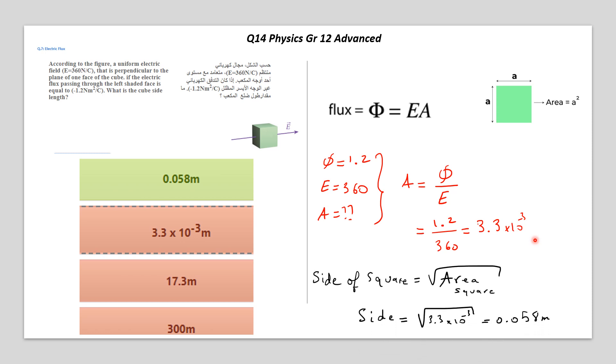But don't forget, we need to calculate the side of the square. So it's the square root of the area. So it's the square root of this value, and the answer is 0.058 meters.